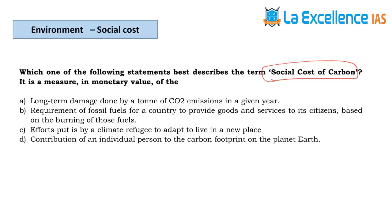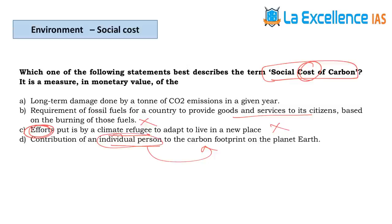The next question is about social cost of carbon — use the elimination technique. We are trying to measure environmental cost in economic terms. Option 1 — long-term damage done by a ton of CO2 emissions in a given year. Option 2 — requirement of fossil fuels for a country to provide goods — that is not a cost. Option 3 — efforts by a climate refugee to adapt — cannot be measured as cost. Option 4 — individual person's contribution to carbon footprint — that is individual, not social cost. So the answer is option 1.